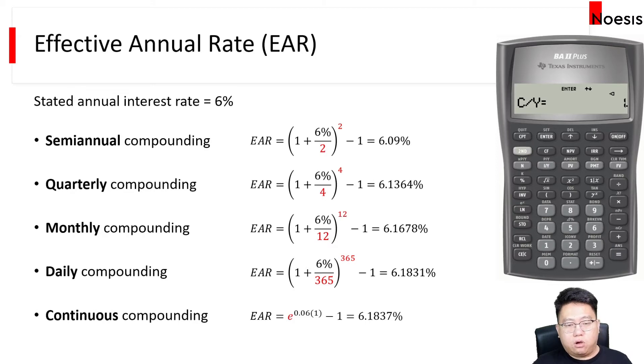For semi-annual compounding, I will change that to 2. That means interest is compounded twice a year, every 6 months. Then I will move up to EFF and press Compute, CPT. That gives me 6.09% per year. So in other words, if the interest is compounded every half a year, that is 3% every 6 months, it compounds to 6.09% for the whole year.